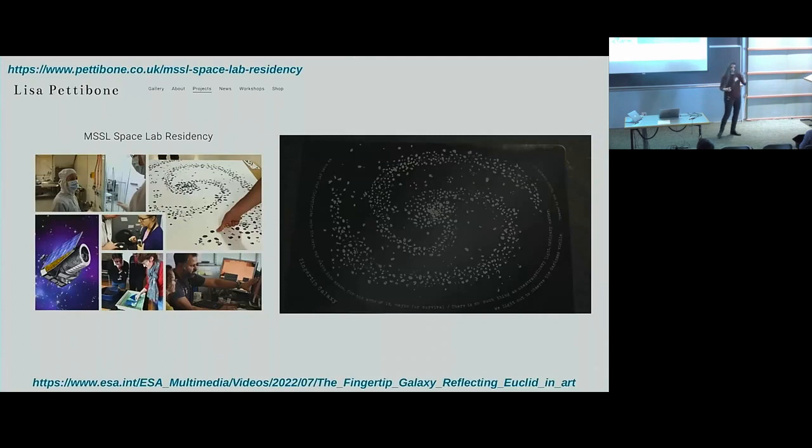This is what we call Euclid wide. We also have a deep survey which is about 60 square degrees, and these are chosen fields around the sky. They are the yellow dots, but they are 60 square degrees and they are going to be extremely deep, two magnitudes deeper compared to the wide survey. So you can expect a lot of beautiful data. We are looking into the high redshift above redshift one with great accuracy.